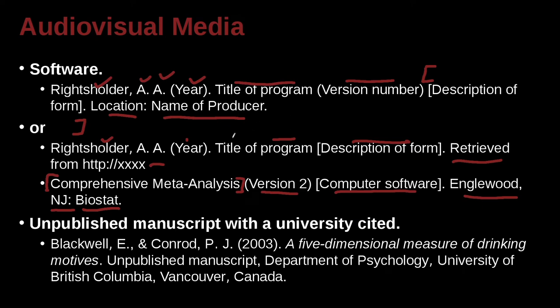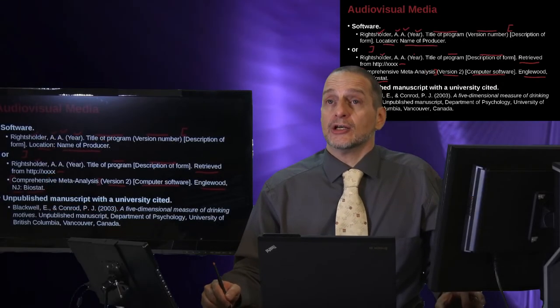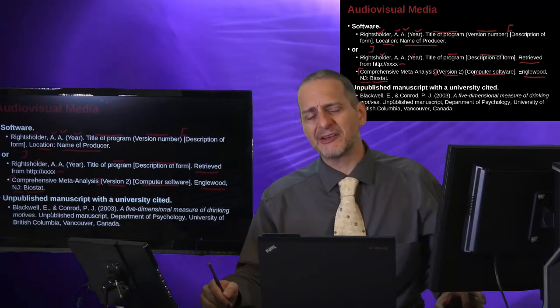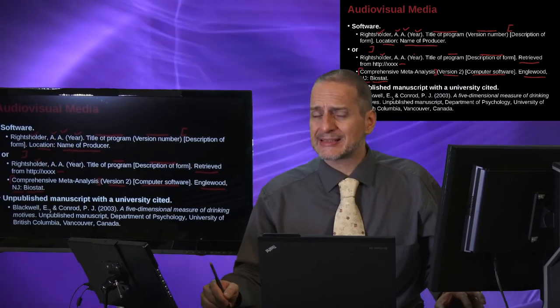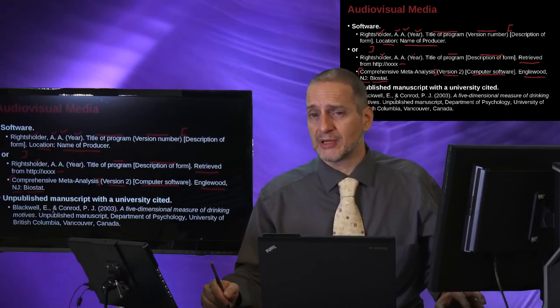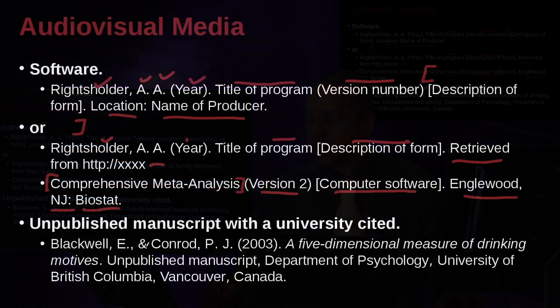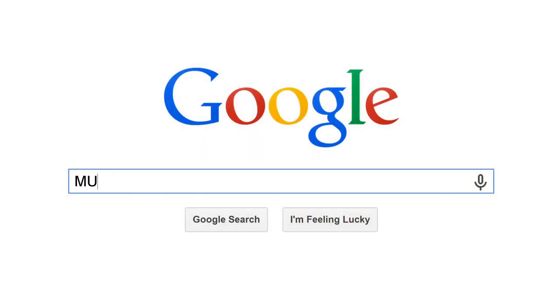How about some information that's written but is an unpublished manuscript, with a university cited? This is an example of something where, at some universities, professors write papers and they don't really publish them, but they put them online as part of ongoing research. Sometimes it's called a monograph — it's kind of a paper, but it's not a published paper. Let's take a look at how we would cite that — maybe you found it through Google Scholar.